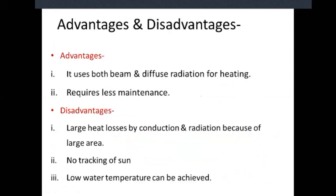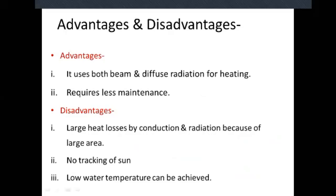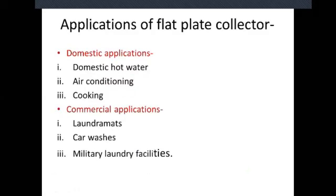Advantages of the flat plate collector: it uses both beam and diffuse radiation for heating, as it receives total radiation from the sun, so we can obtain both types of radiation. It also requires less maintenance. In case of disadvantages: large heat losses by conduction and radiation because of the large area. We can't track the sun — this is a major disadvantage — and there is no tracking mechanism. Low water temperature is available in such type of collector.